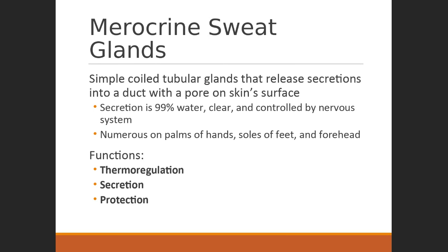Merocrine sweat glands, also called eccrine, are more evenly distributed over the body. Their secretions are mostly water, maybe some salts — very clear and watery in consistency. This is the type of sweat produced for thermoregulation: on a hot day, you sweat, it evaporates, and it cools you. Apocrine glands are found more in the axillary and pubic regions. Their secretion is a lot more viscous — a thicker secretion — and this is the sweat more associated with odor.